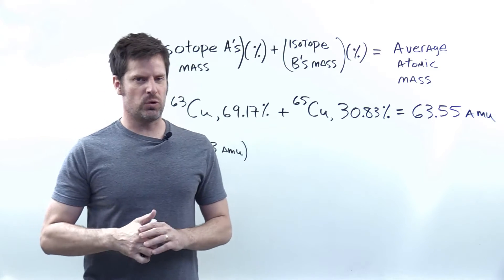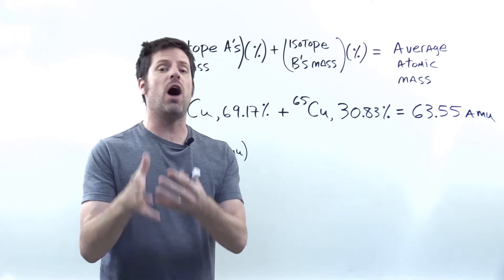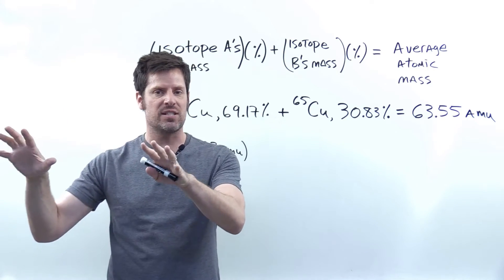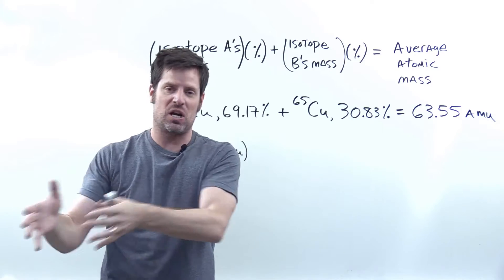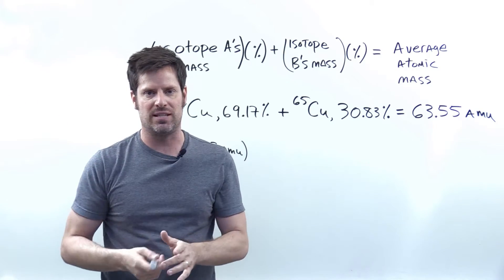So for this kind of problem, it's important to remember that the atomic mass that we see on the periodic table is actually a weighted average that takes into account all of the different masses of all the various isotopes of that element, each multiplied or weighted by its respective percentage. For example,